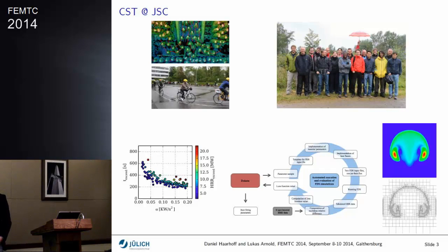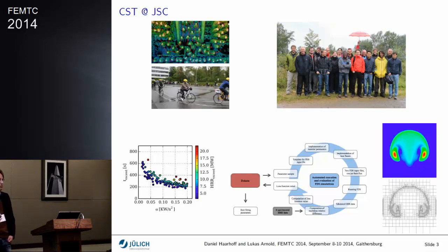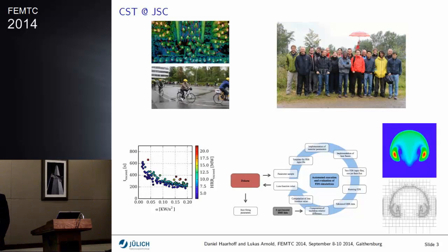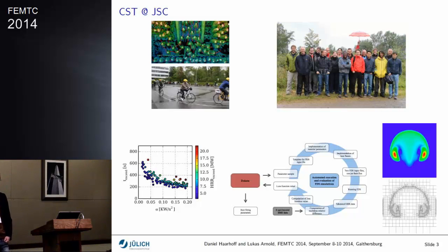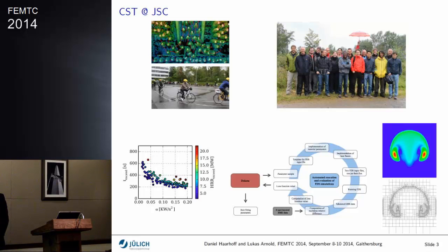Obviously you cannot do this by hand, so you need full automation: generate geometries for FDS, generate parameter sets, run simulations, analyze them. We also use such automation techniques for optimization, where we couple FDS with all of the automation machinery to Dakota — an optimization tool which directs FDS and tells FDS what to do, which parameters need to be evaluated to get the optimization run.